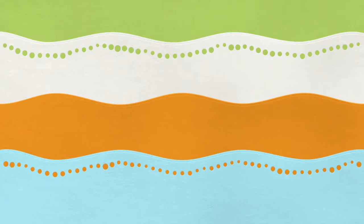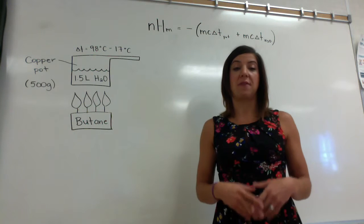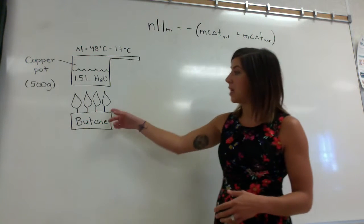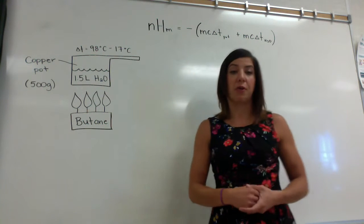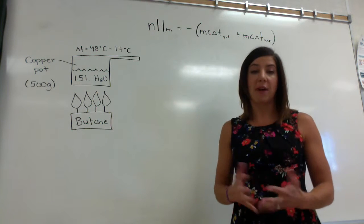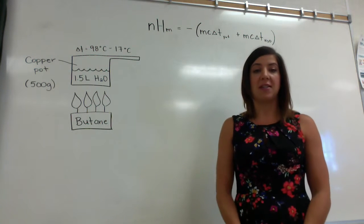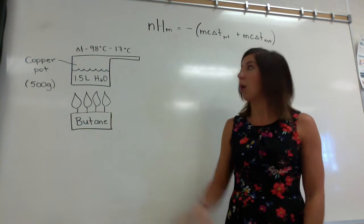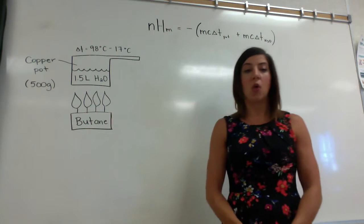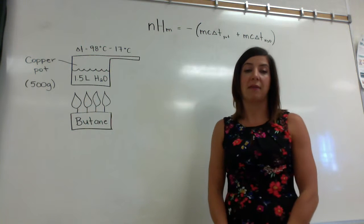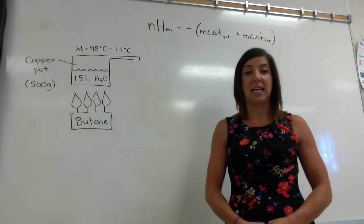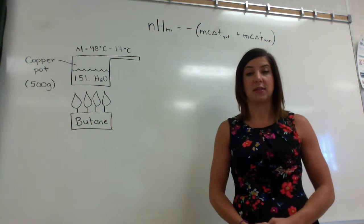Calculate the enthalpy of the combustion reaction of 13 grams of butane, if we were to burn 13 grams of butane on a campfire stove used to heat up a copper pot that weighs 500 grams with 1.5 liters of water from 17 degrees Celsius to 98 degrees Celsius.